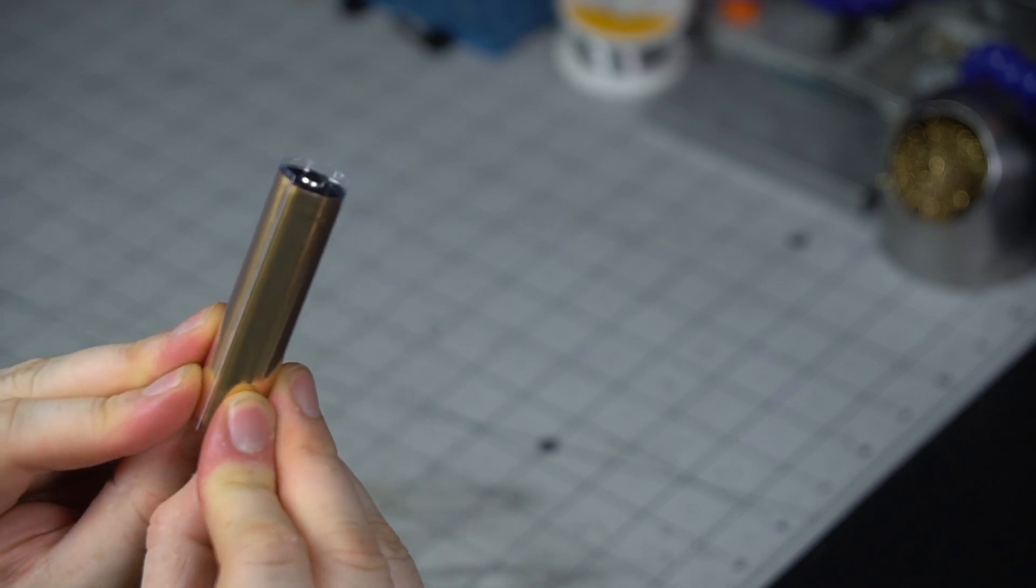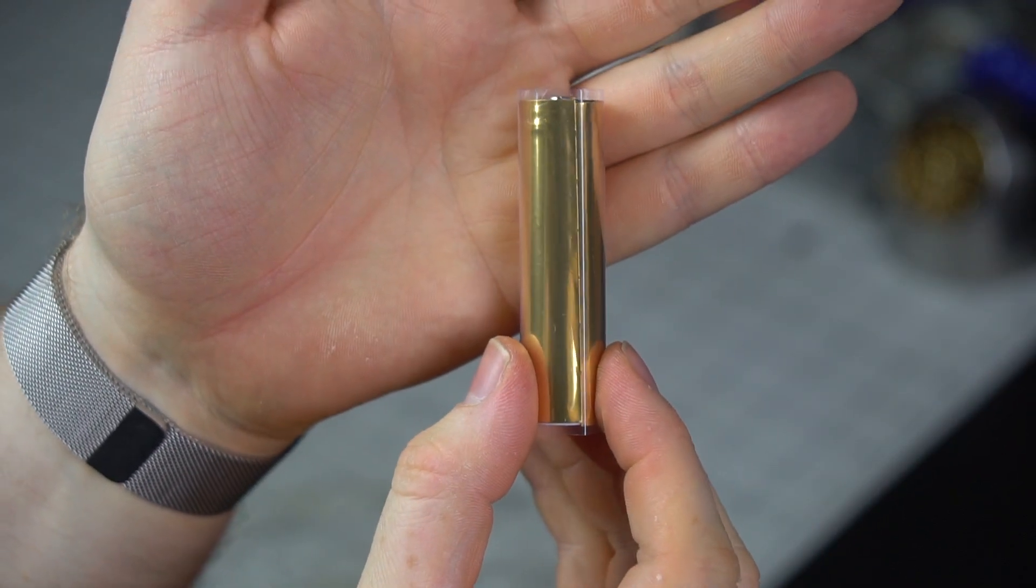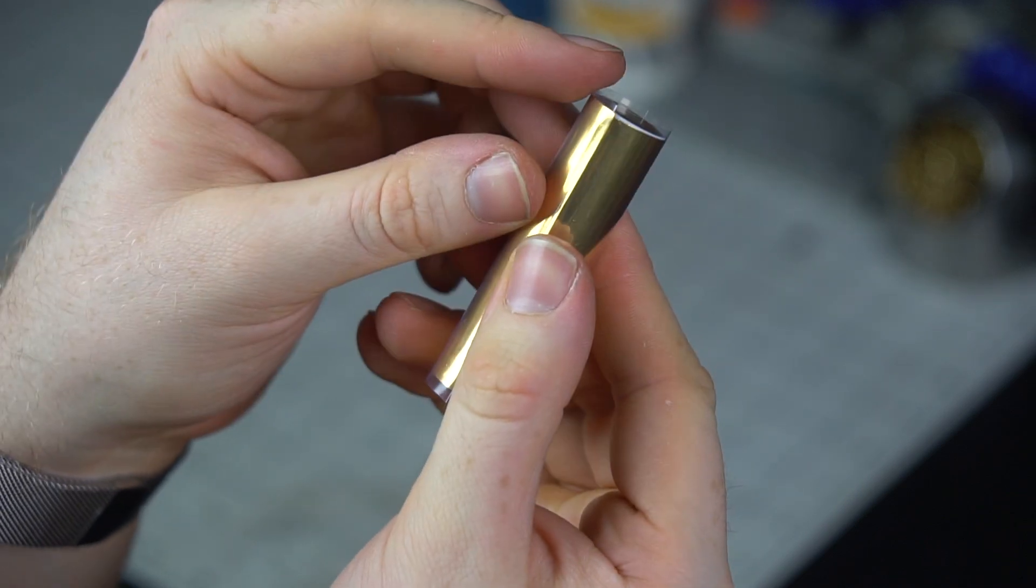Line up with that line and you want a little bit poking out the top. I can show you, you want a little bit of the heat shrink poking out the top and a little bit poking out the bottom because when it heats it, it will fold over like that.